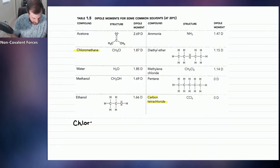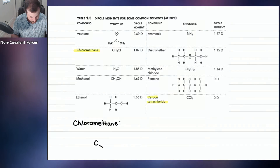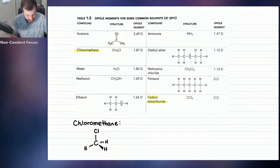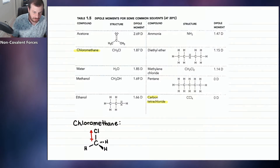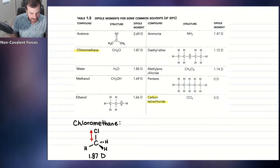Chloromethane has the formula CH₃Cl: a carbon in the middle with three hydrogens and one chlorine. The dipole arrow points toward the chlorine with a plus sign on the carbon side, giving a dipole moment of 1.87 Debye. Carbon tetrachloride (CCl₄) has a carbon in the middle with four chlorines attached. If we draw the four dipole arrows, they all cancel out because they face in opposite directions with equal intensity, giving a net dipole moment of zero.